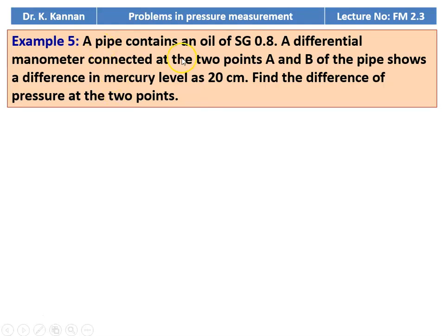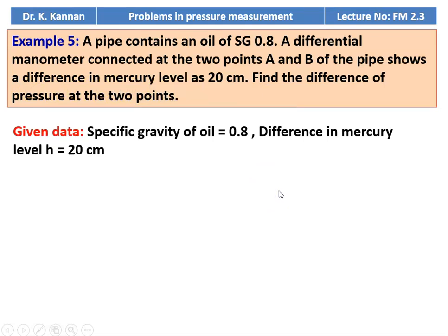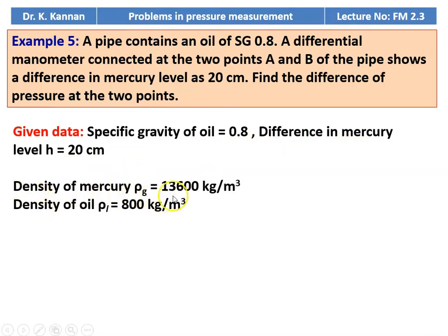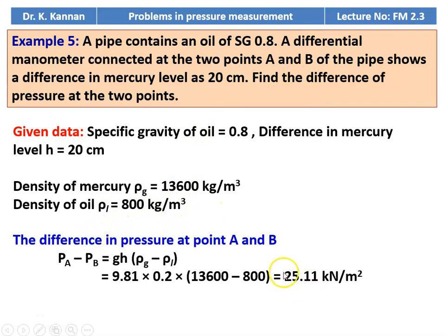Example number 5. A pipe contains oil of specific gravity 0.8. A differential manometer connected to points A and B of the pipe shows a difference in mercury level of 20 centimeters. Find the difference in pressure between the two points. Density of mercury equals 13,600 kg/m³, density of oil ρₗ equals 800 kg/m³. The difference in pressure: Pₐ minus P_B equals g × H × (ρg − ρl) equals 9.81 × 0.2 × (13,600 − 800) equals 25.11 kilonewtons per meter square.